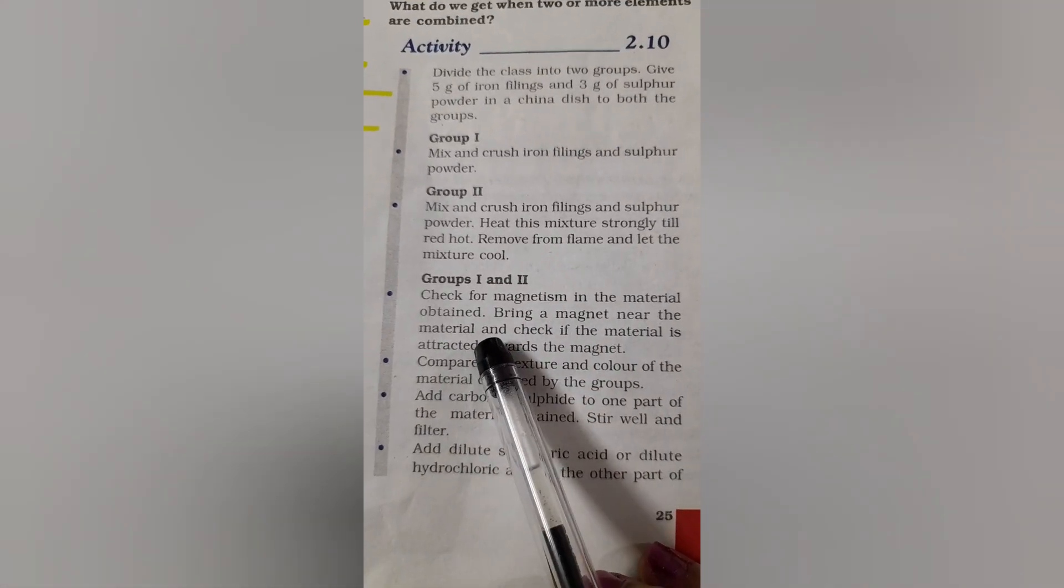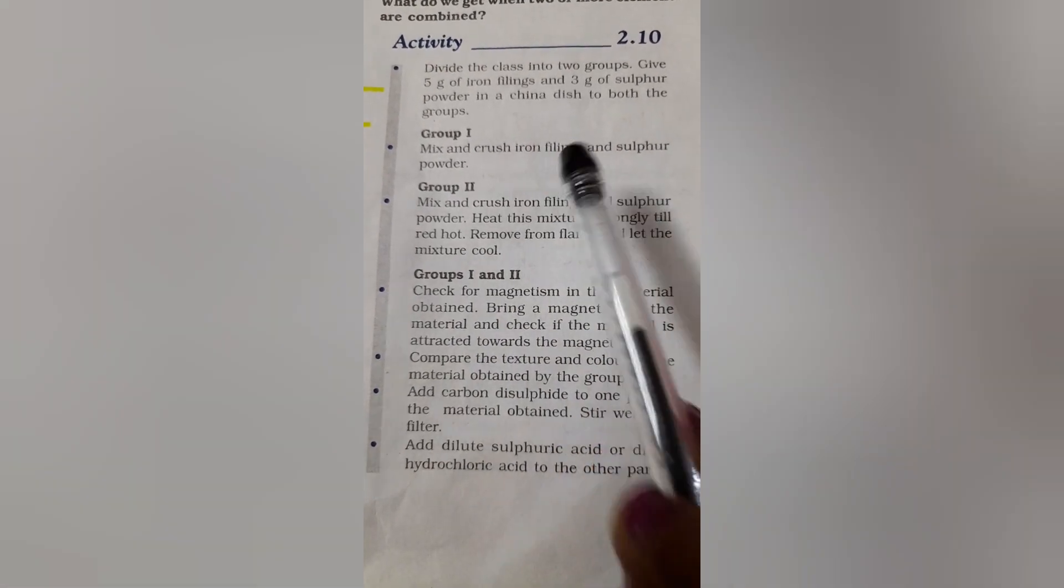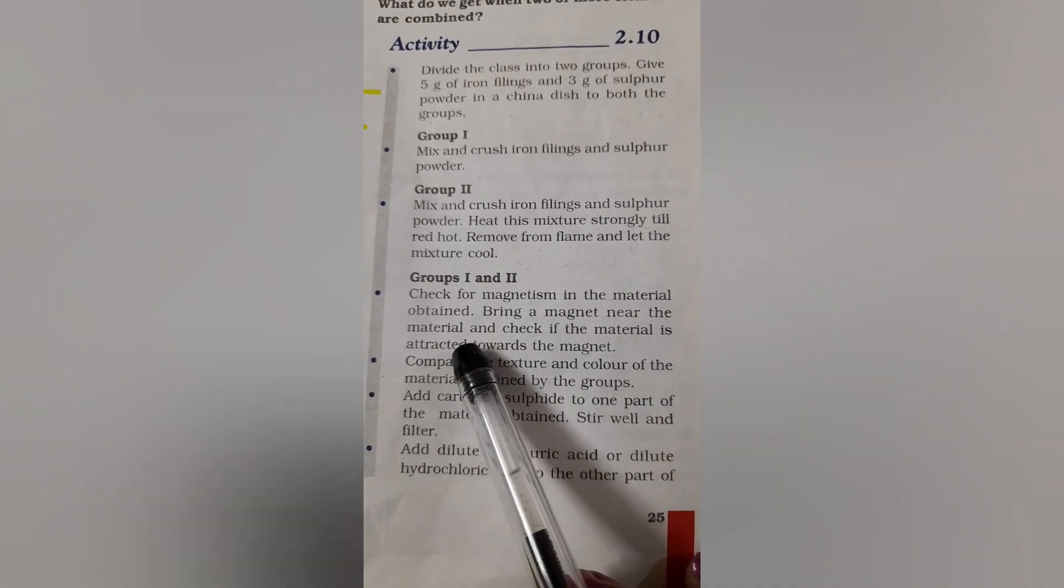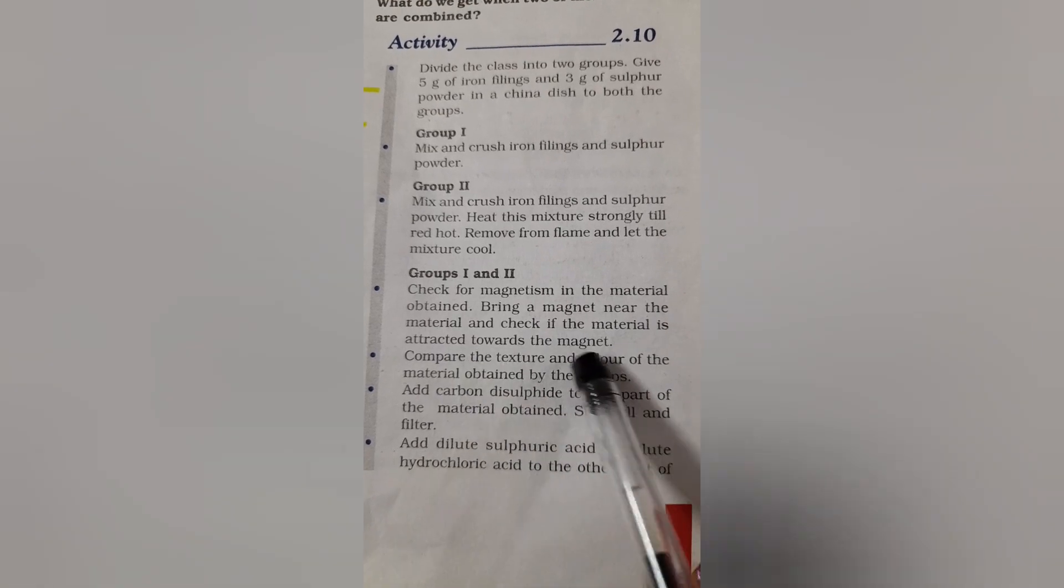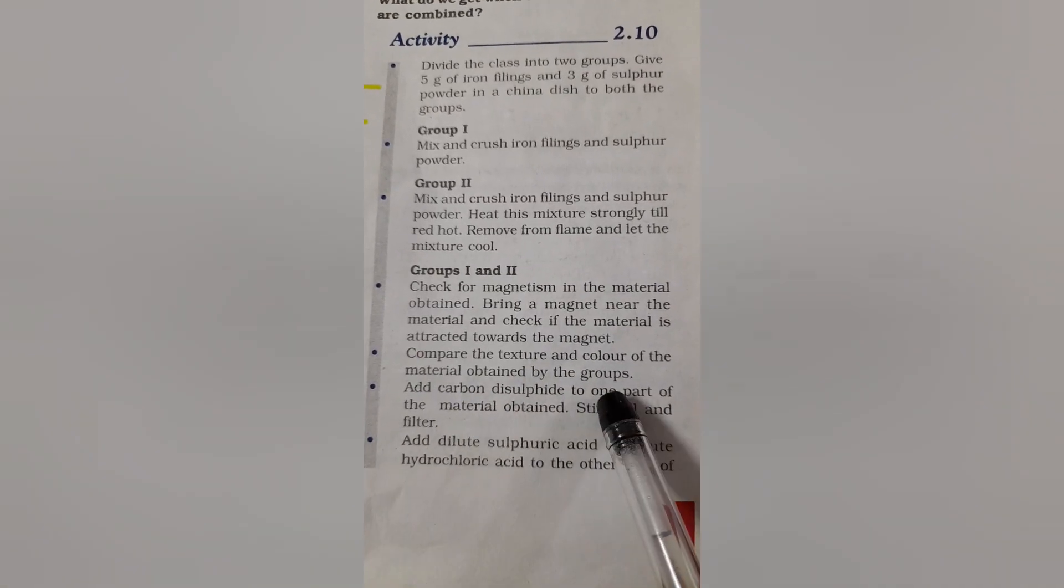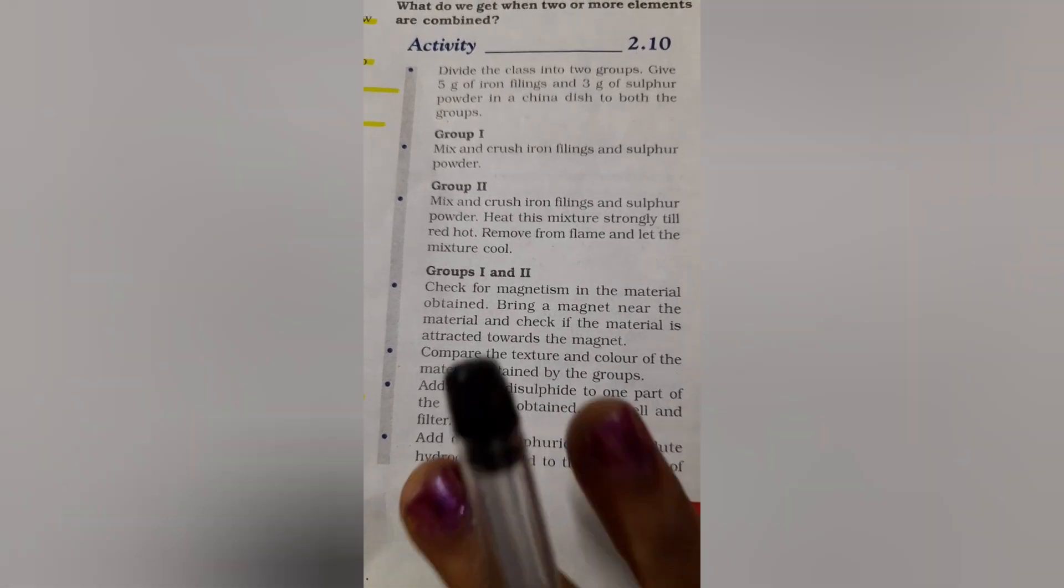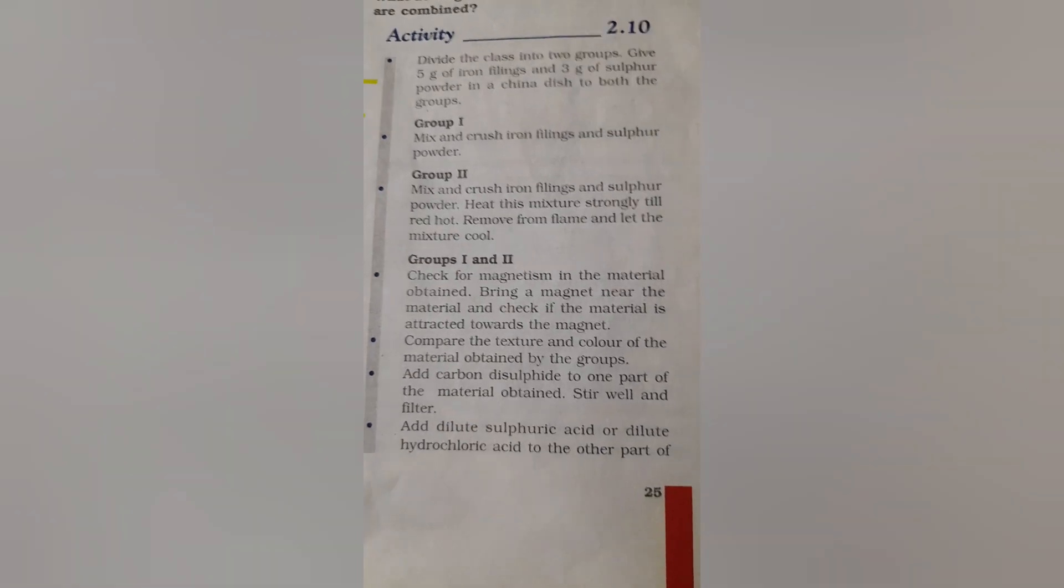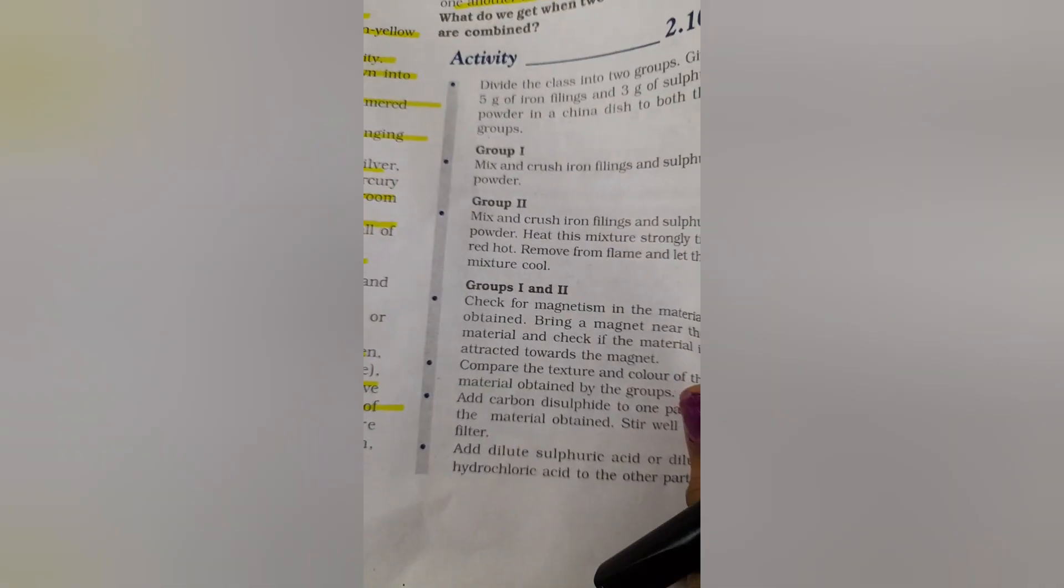For group 1 and 2, check for magnetism. You are crushing the iron filings which possess magnetic properties. Now bring a magnet near the material and check if the material is attracted to the magnet. Then compare the texture and color of the material obtained by the groups. Add carbon disulfide to one part of the material obtained, stir well, filter, and to the other part add dilute sulfuric acid or dilute hydrochloric acid.